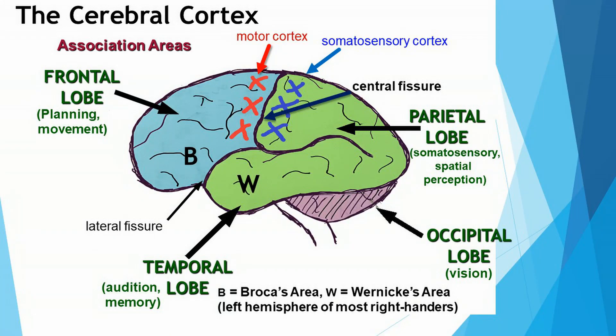We're not quite done with the cerebral cortex yet. There are still some structures in the cerebral cortex that I want you to know. First of all, you have Broca's area and Wernicke's area. These are some of the speech centers in the human brain. I've put a big B in the frontal lobe of this brain, and that is showing you where Broca's area is located.